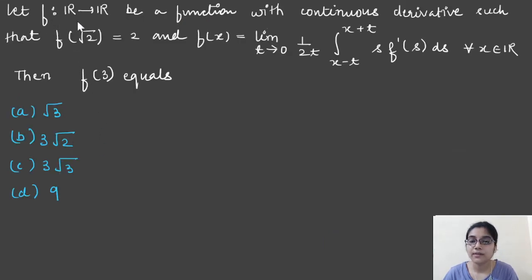You have been given a function f from R to R whose derivative is continuous and f of root 2 equals 2, and the function f of x is being given equal to this. So you want the value of f of 3.